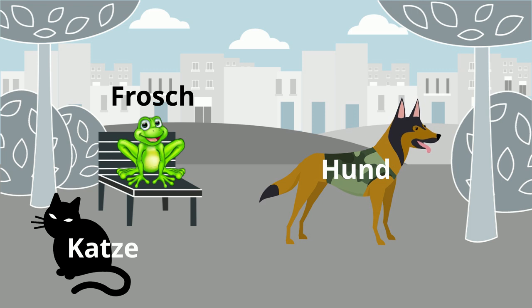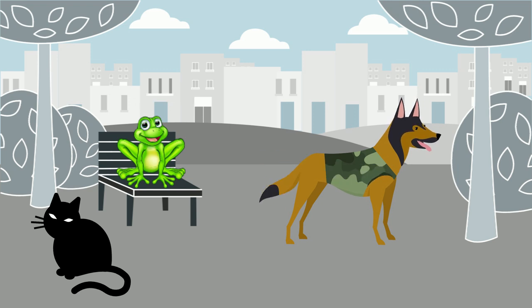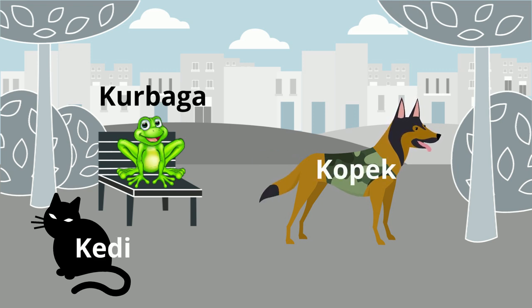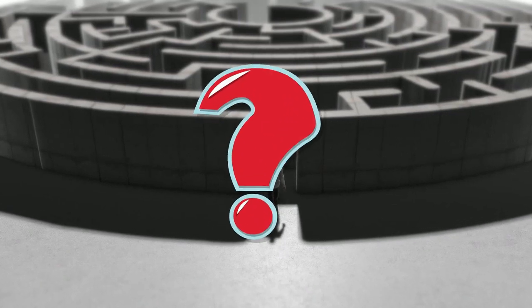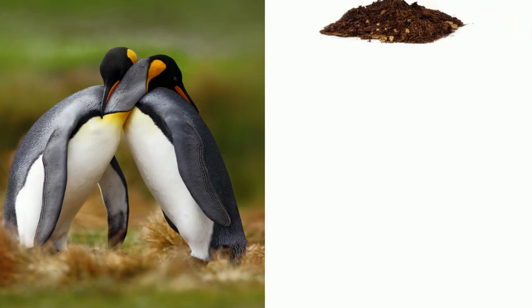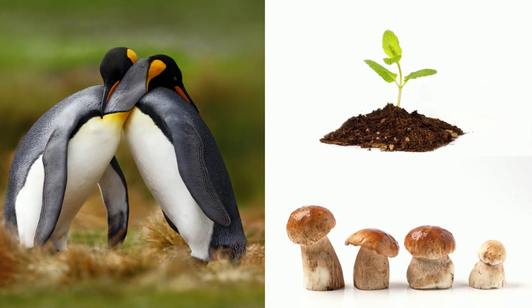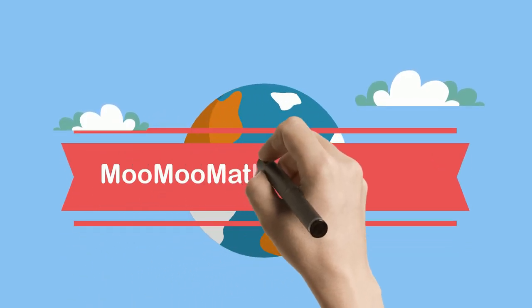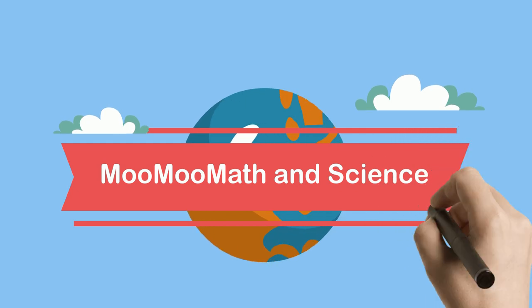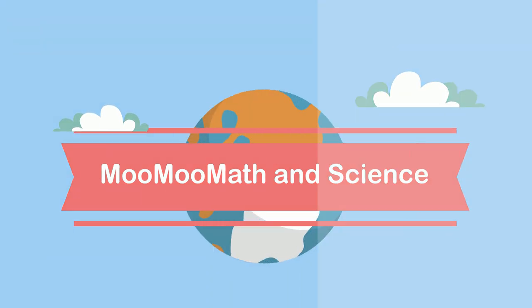And if you lived in Turkey, you would use different names still. In order to avoid confusion when naming animals, plants, fungi, and all other organisms, a scientific name can be used. Welcome to MooMooMath and Science and Binomial Nomenclature.